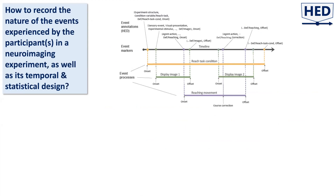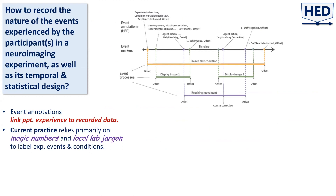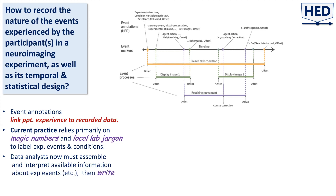So how do we record the nature of events experienced by participants? First, one needs to ask: what is an event? Event annotations link participant experience to recorded data. But current practice relies primarily on magic numbers, such as event type 37, and local lab jargon, such as event type 'target', to label experimental events and conditions. Data analysts must now assemble and interpret available information, then write custom code for each archived dataset they wish to analyze — making analysis across datasets infeasible.